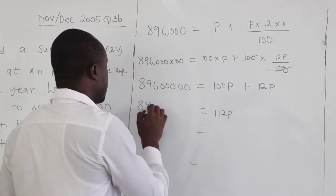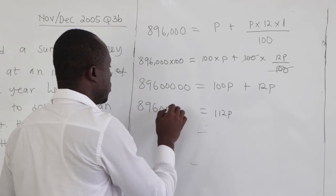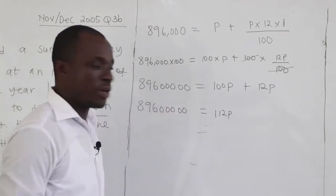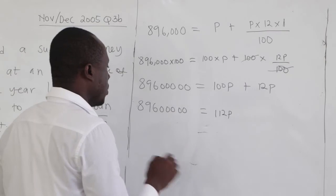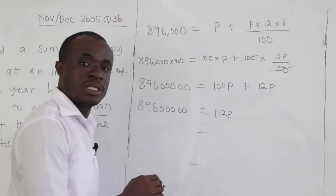We have 89,600,000. We want to find P. So we divide both sides by what is multiplying the P, which is 112.